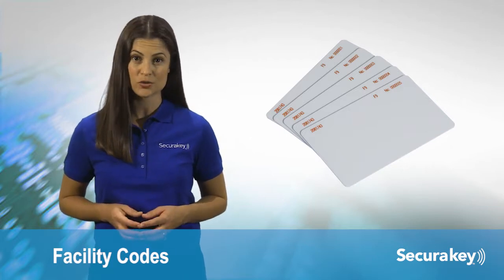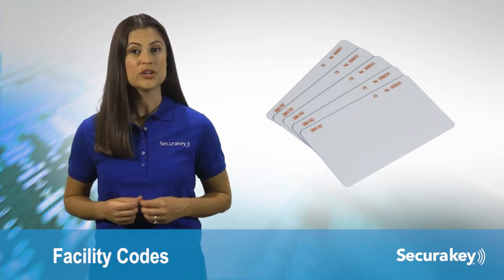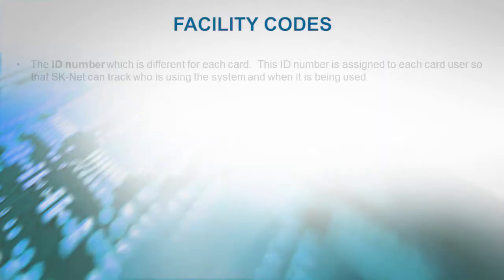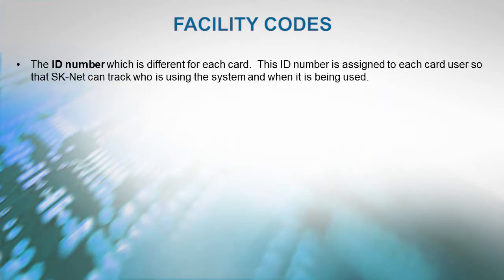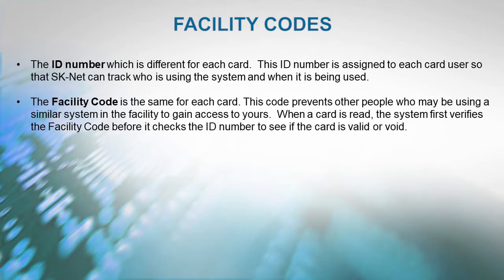Facility Codes: Access cards used with SecuraKey's access control systems utilize two encoded numbers. The ID number is different for each card and is assigned to each user so that SKNet can track who is using the system and when. The facility code is the same for each card and prevents other people using a similar system from gaining access to yours. When a card is read, the system first verifies the facility code before checking the ID number to see if the card is valid or void.